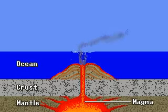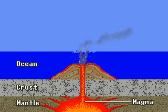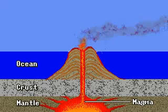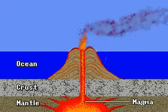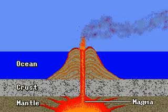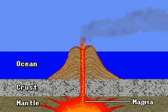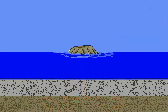The eruptions deposit large amounts of lava on the ocean floor. Over time, the lava builds up above sea level and forms an island. The lava is under the cold sea water.